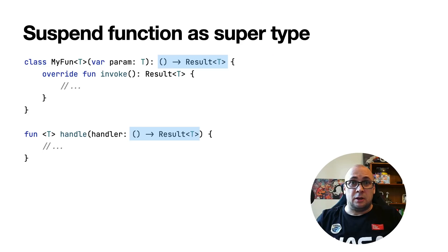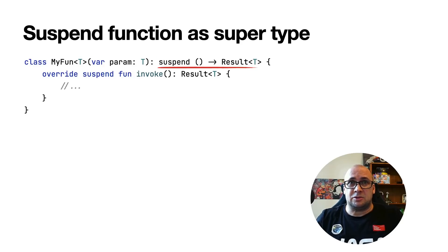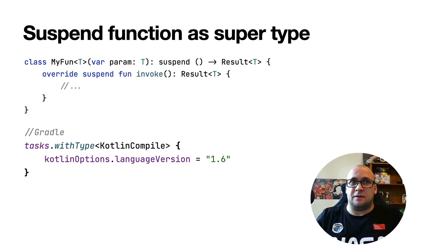In Kotlin, it is possible to use a functional type as a supertype — sometimes useful when you need to customize a function, for instance by passing an extra parameter. But the same didn't work if the functional type was marked with the suspend keyword. This is a little unfortunate because there are situations where you would want to derive from such a type. In 1.5.30, it is now possible to use a suspend functional type as a supertype. And of course, you have to enable this feature via the compiler option.